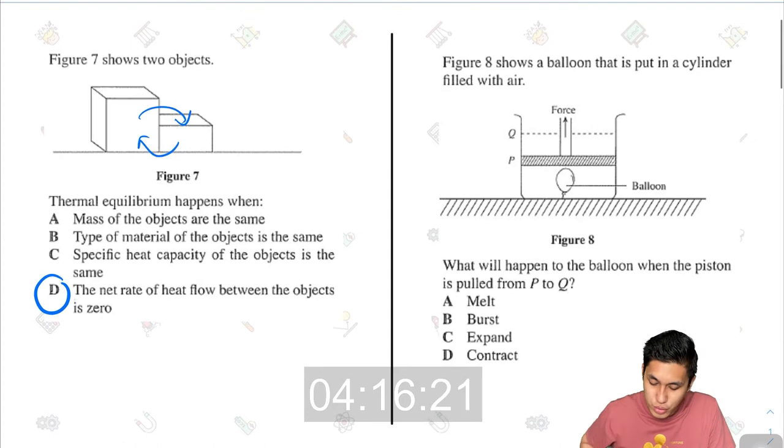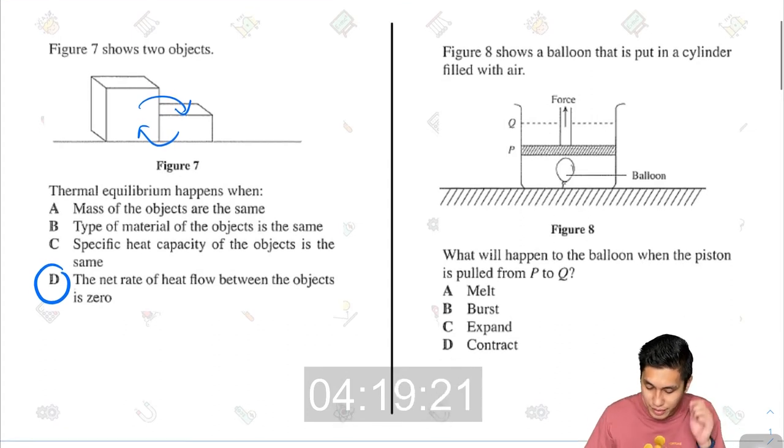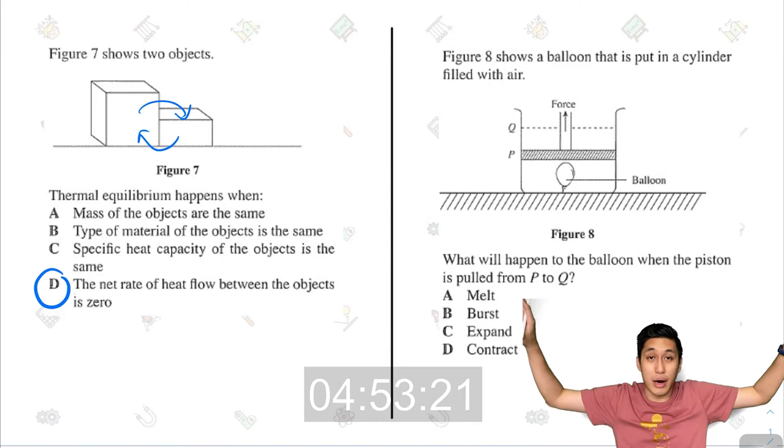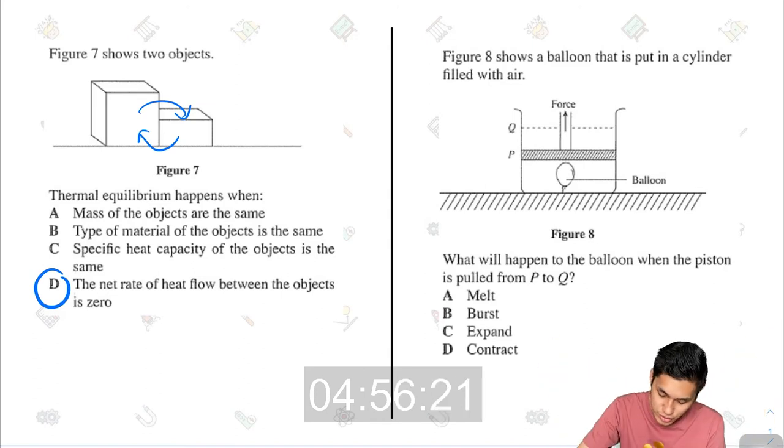Next, figure 8 shows a balloon that is put in a cylinder filled with air. What will happen to the balloon when the piston is pulled from P to Q? I think this is quite predictable. When you pull up on the piston, essentially you are increasing the volume. When you increase the volume, definitely the pressure is going to drop. So the pressure inside the balloon is going to be higher than the pressure of air in the cylinder. So the pressure inside the balloon is going to push out. That's going to expand the balloon. The balloon is going to expand.